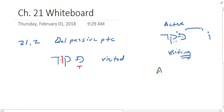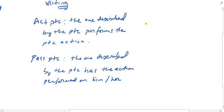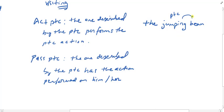With active participles, the participle has a gender and number that matches whatever it's describing, and whoever or whatever the active participle is describing is performing the action the participle represents. For example, 'the jumping bean' — 'jumping' is the active participle modifying 'bean,' meaning the bean is performing the jumping action.